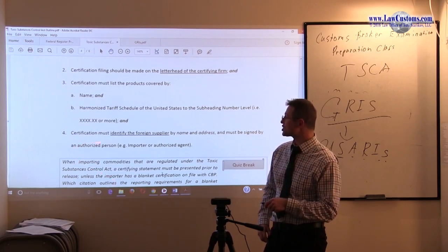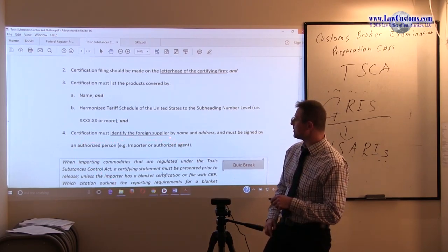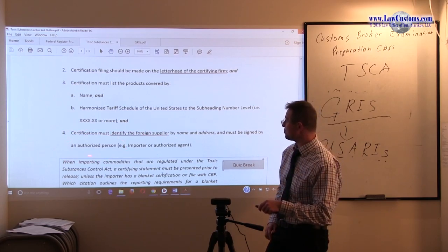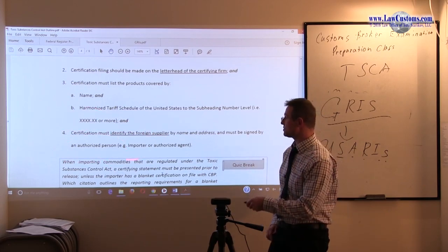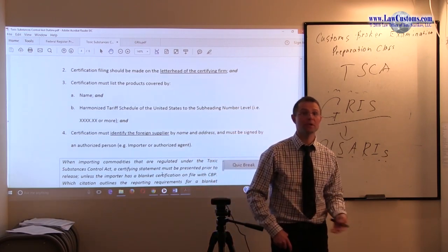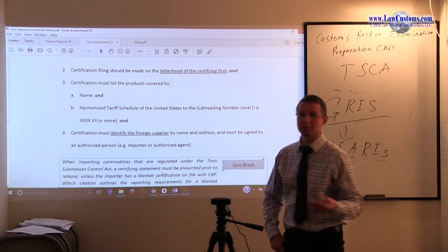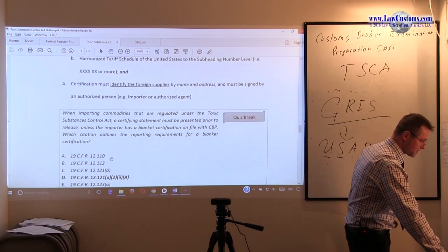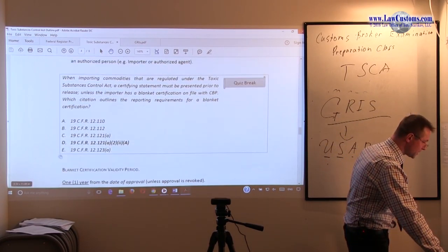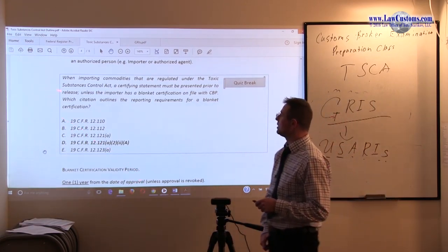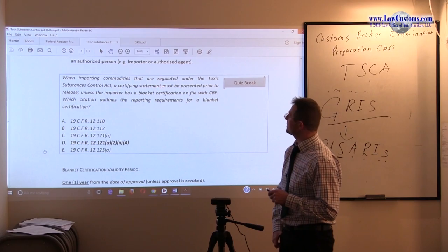Certification must identify foreign supplier by name and address and must be signed by an authorized person. Who is an authorized person? Usually it is the importer of record, because the importer of record is responsible for pretty much everything that goes, that can go wrong and may go wrong with a particular import. So now with importing commodities...